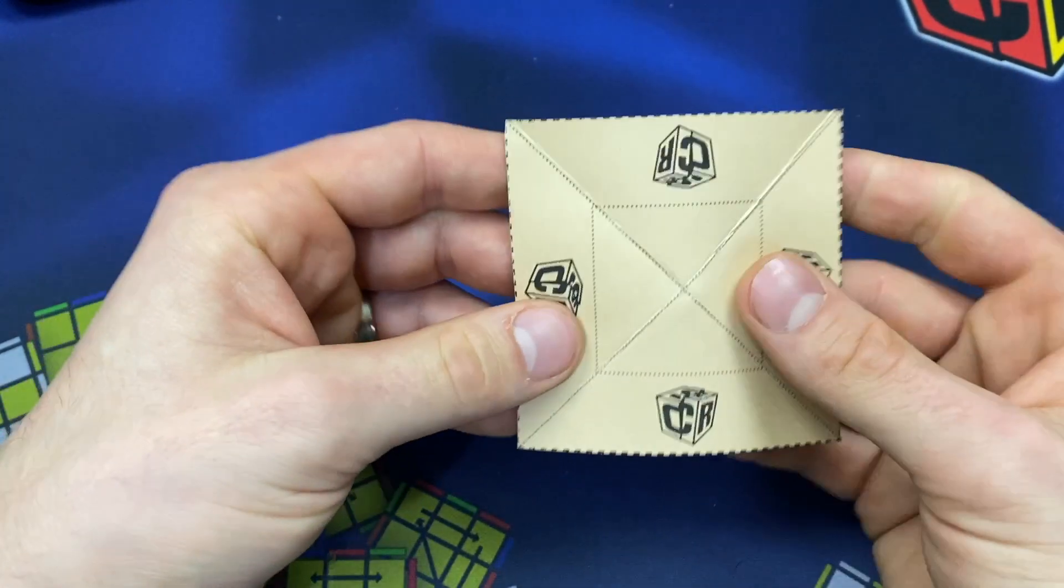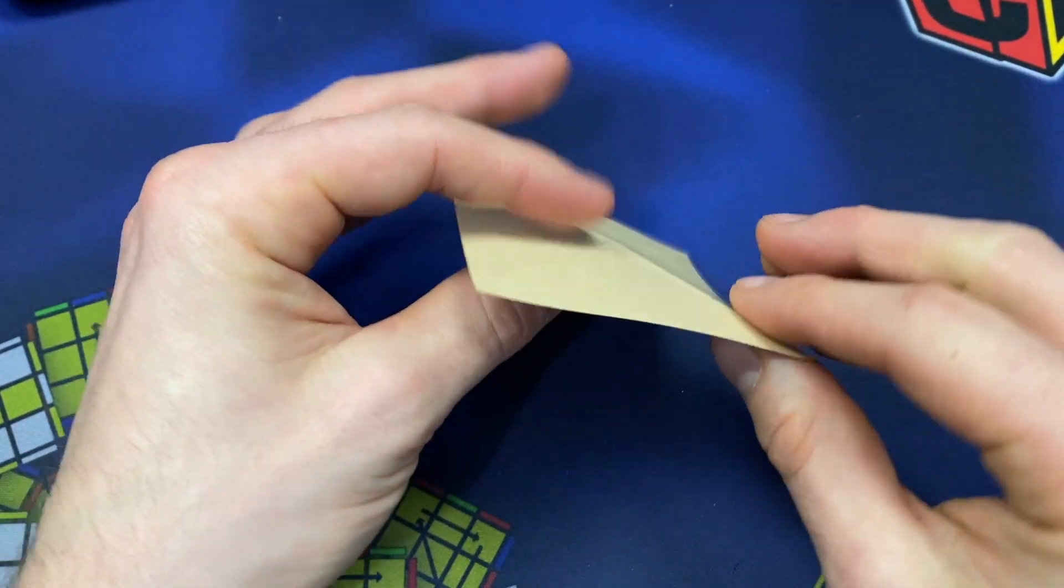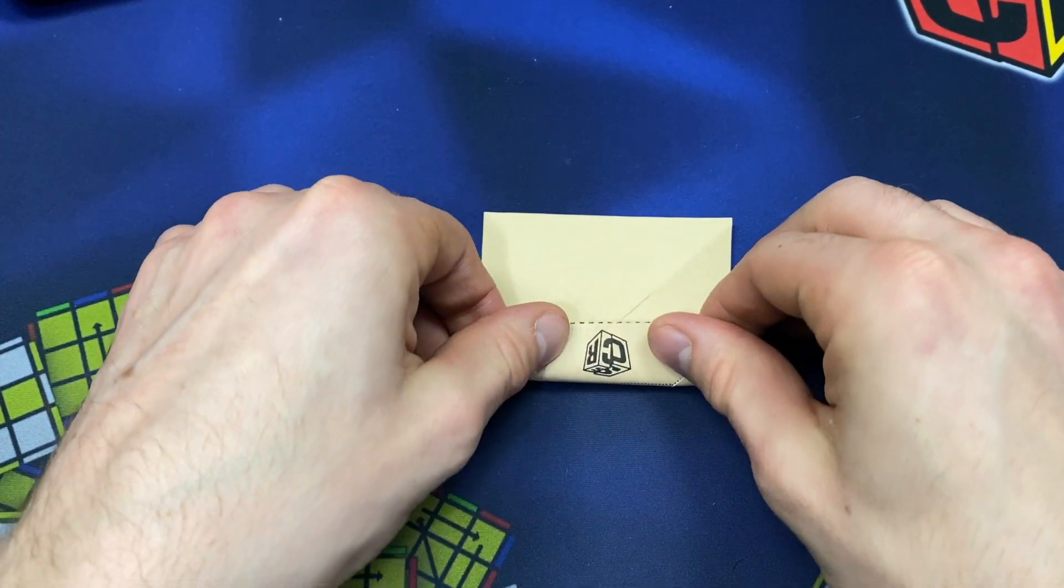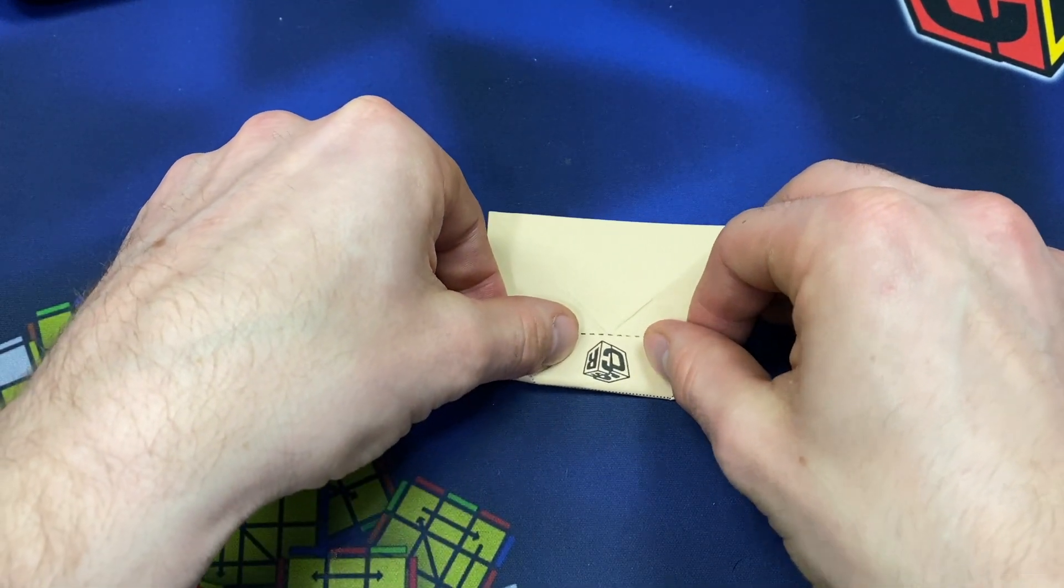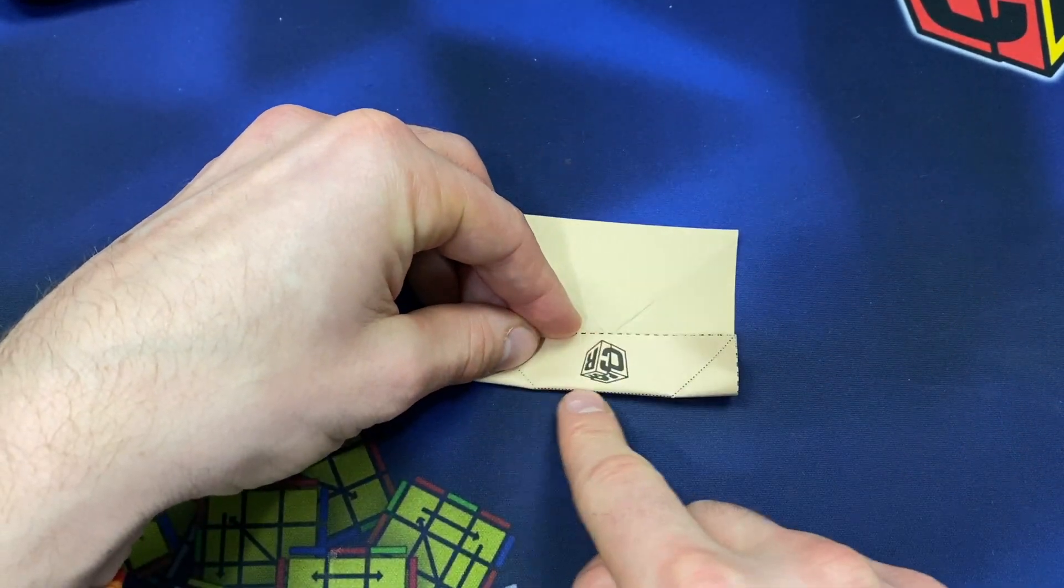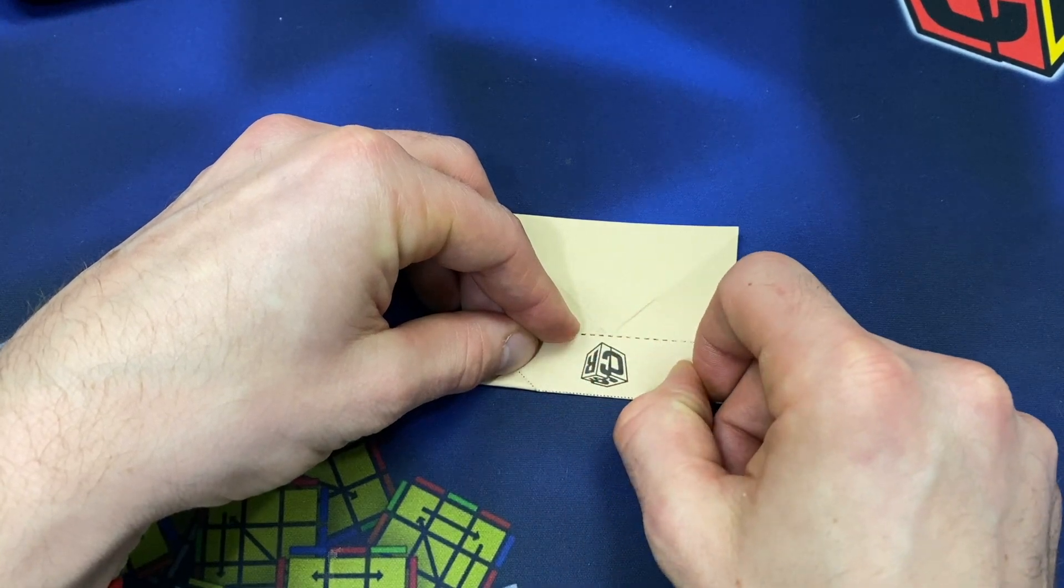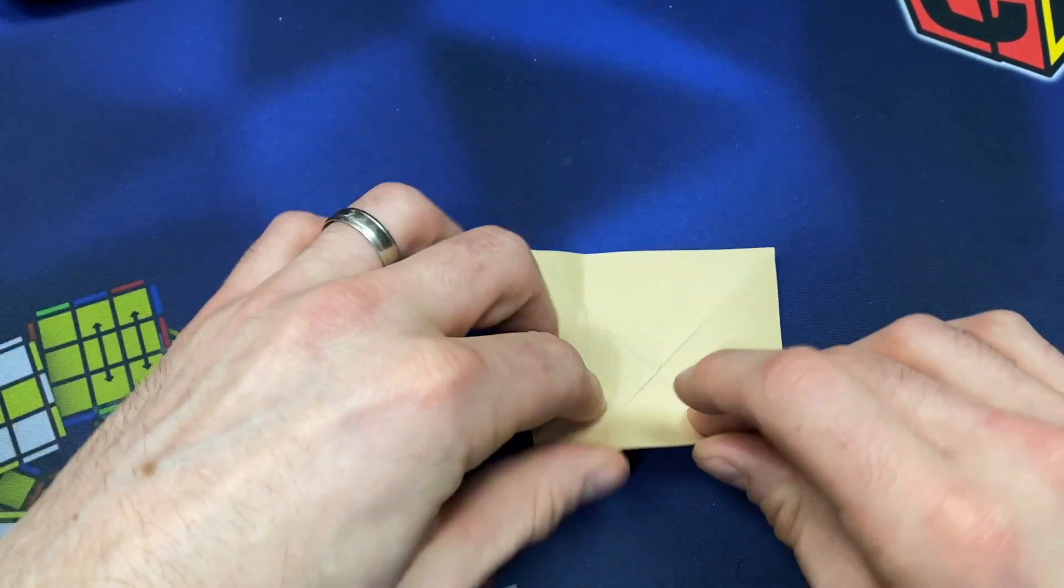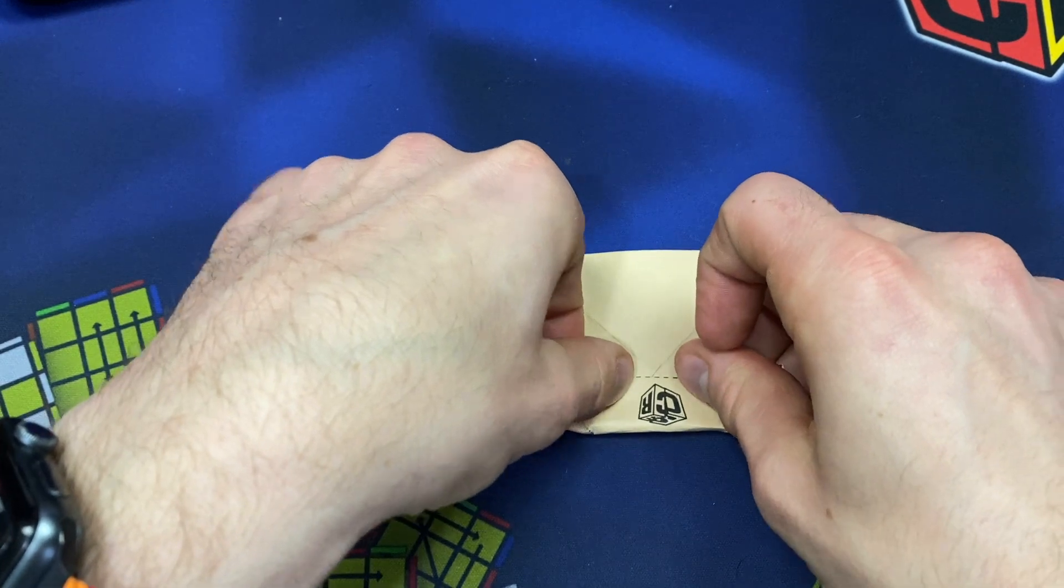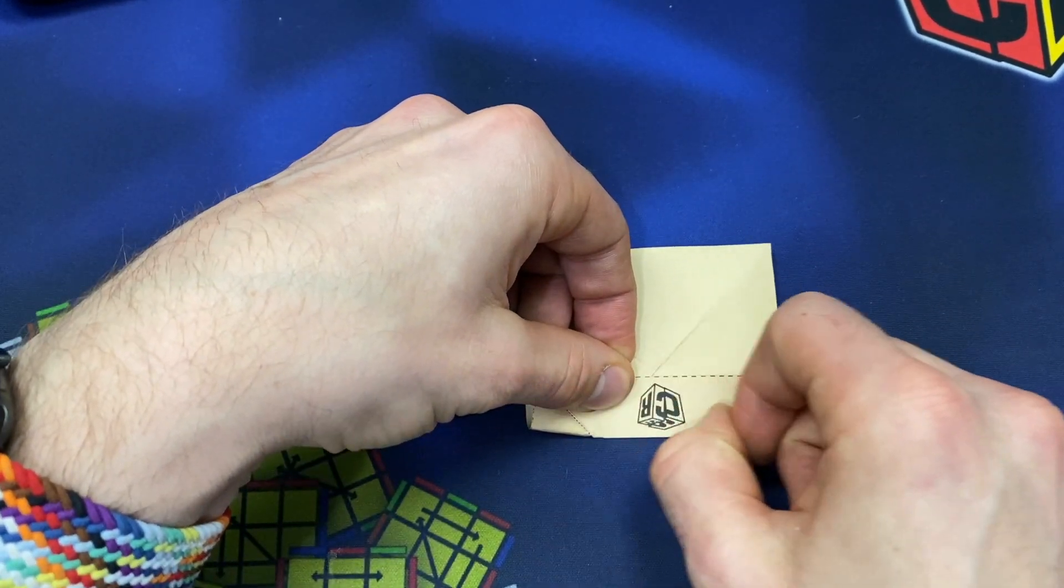Step number two: you're going to crease from the underside from the edge to the center. So if using my template, my logo is showing, and you're only going to crease between those dotted lines. We'll do that four times. Technically this is only needed three times, but we're just going to do it four times.